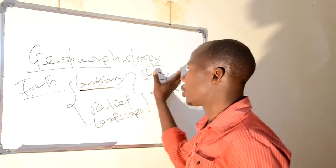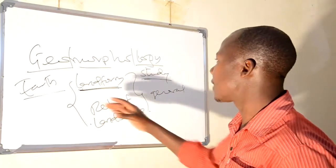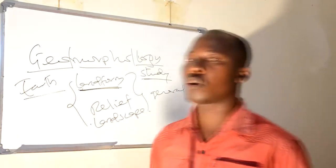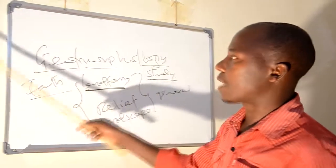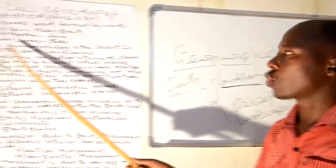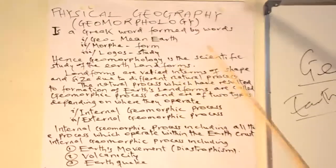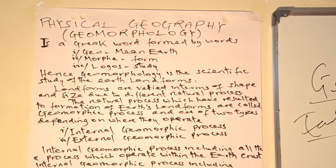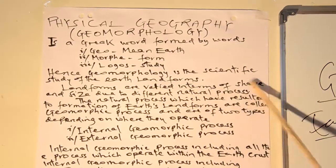Dear students, because we are talking about geomorphology — the study of landforms on the earth surface, or the general appearance of the earth surface either highland or lowlands — it can be described as shown on this paper. Hence, geomorphology is the scientific study of earth landforms, and the meaning of landform has been described as the general appearance of the earth surface. Landforms are varied in terms of shape and size.